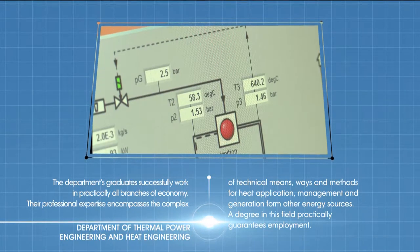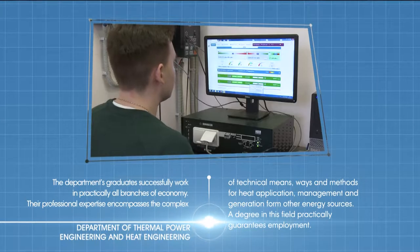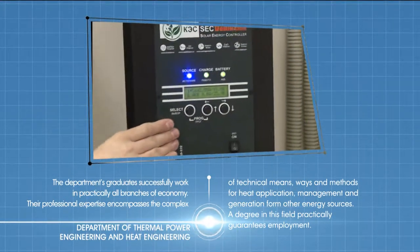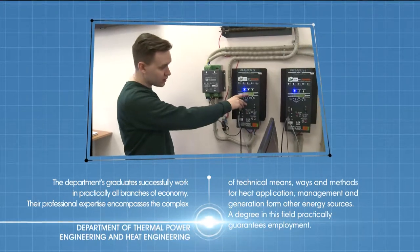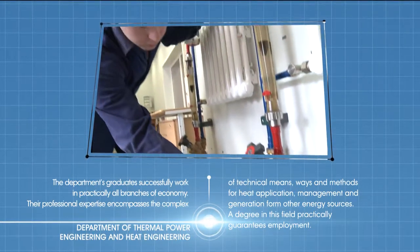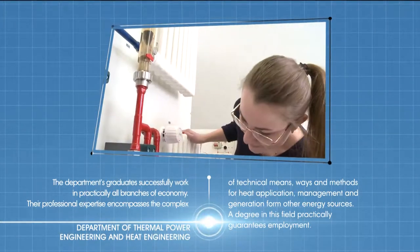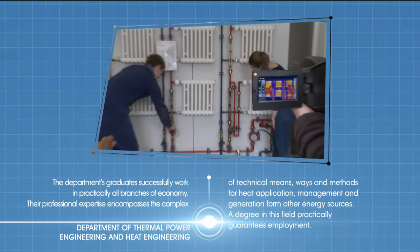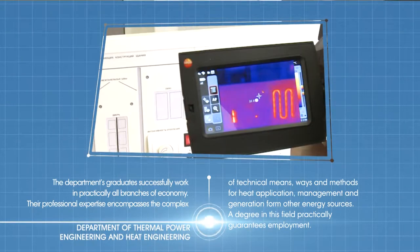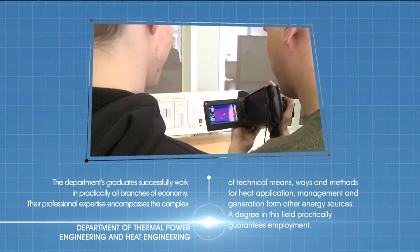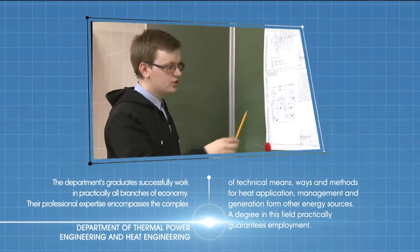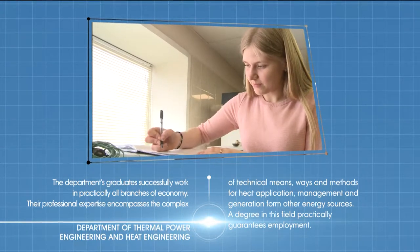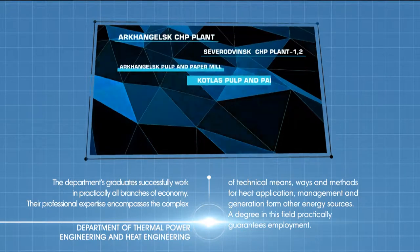Their professional expertise encompasses the complex of technical means, ways and methods for heat application, management and generation from other energy sources. Research into efficient technologies of organic-based energy generation and transformation constitutes one of the priority lines of Russia's scientific, technological and technical development. The department actively collaborates with the region's leading enterprises.